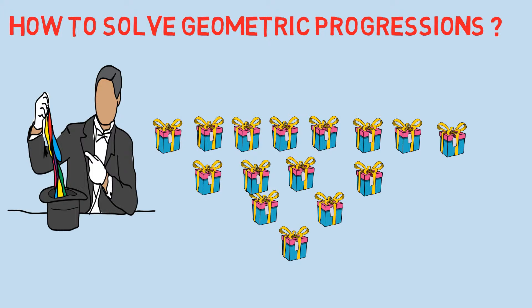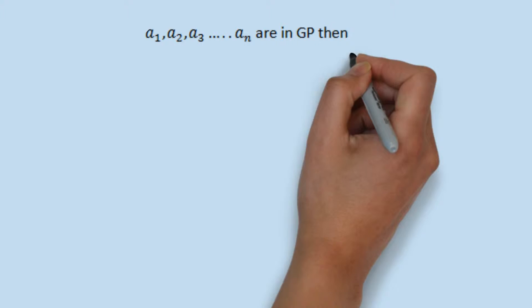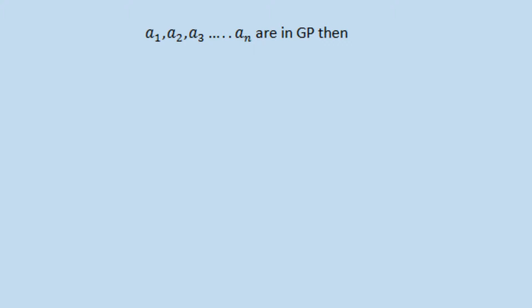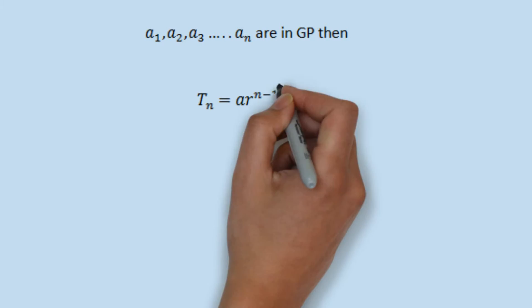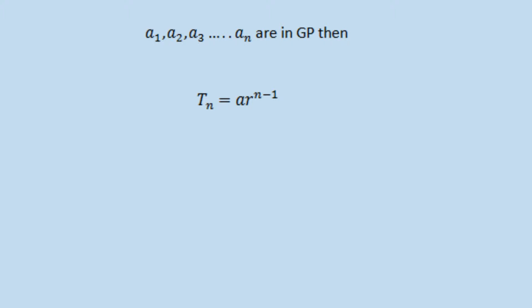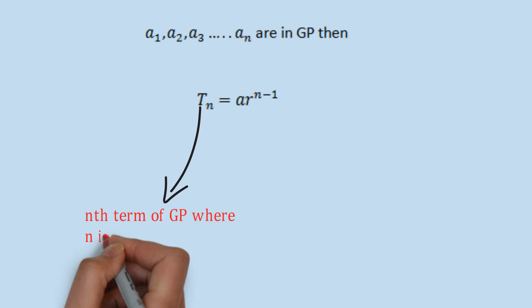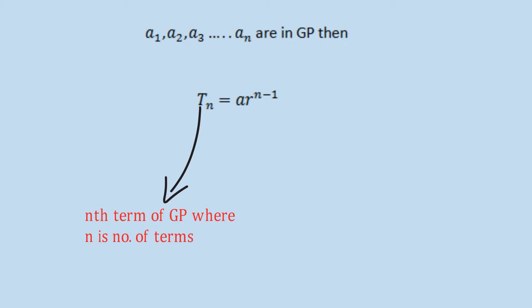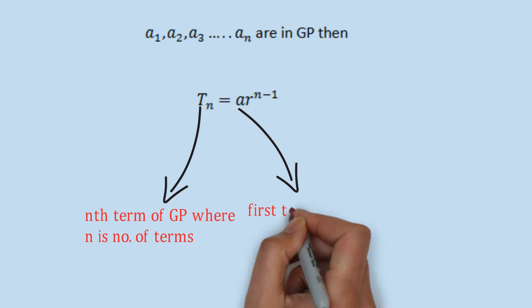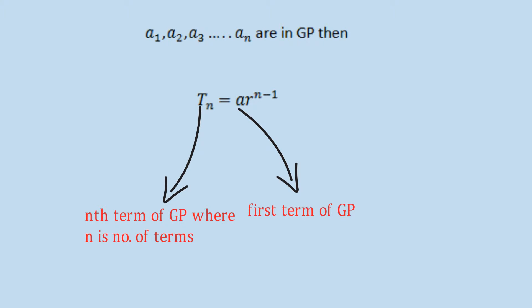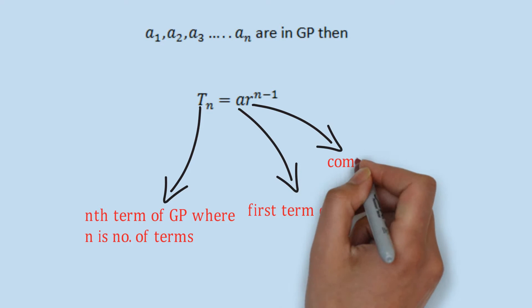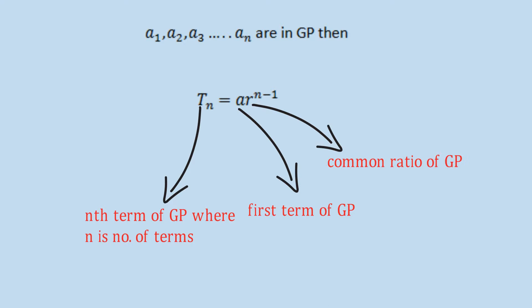Let's see how we can solve any type of geometric progression. Consider a GP with terms A1, A2, A3 up to An. The Nth term formula is Tn = A × R raised to the power (n − 1), where Tn is the Nth term, A is the first term, and R is the common ratio of the GP.